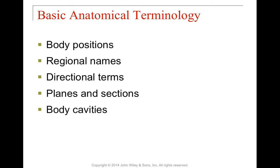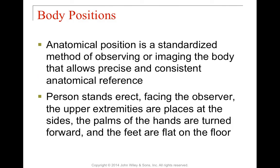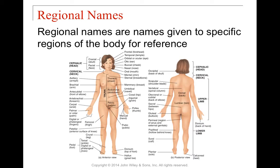Now we'll discuss anatomical terminology: body positions, regional names, directional terms, planes and sections, and body cavities. This is important so you have a relative understanding of direction when discussing body regions. Anatomical position is a standardized method of observing or imaging the body — standing straight up, erect, facing the observer, extremities at the sides with palms turned forward and feet flat on the floor. This provides a consistent anatomical reference point for everyone.